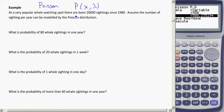So, at a very popular whale watching spot, there have been 20,000 sightings since 1980. Assume the number of sightings per year can be modeled by the Poisson distribution.